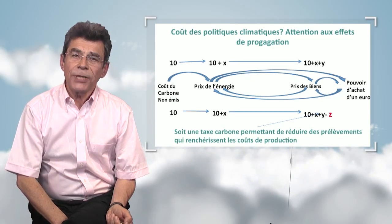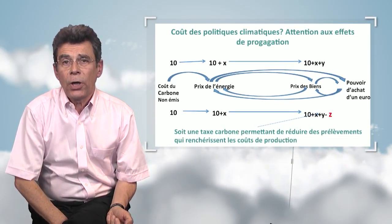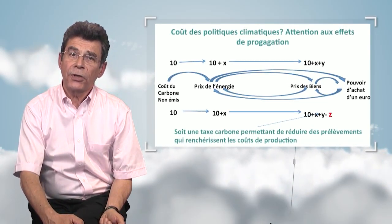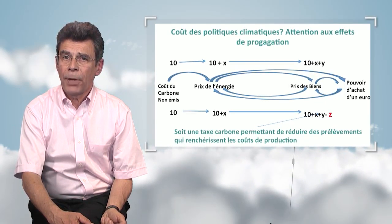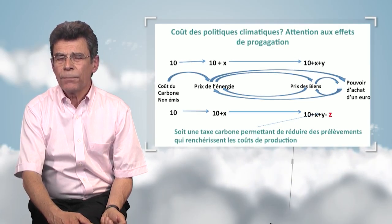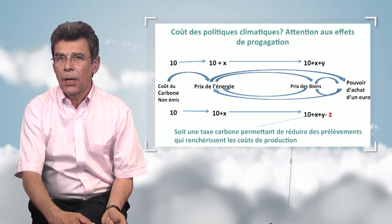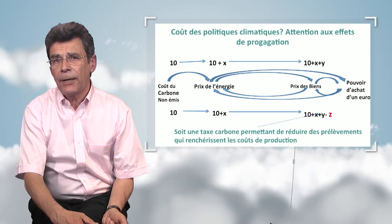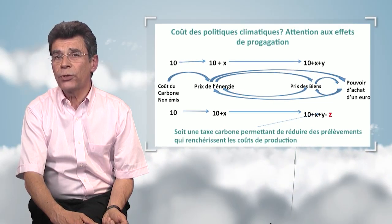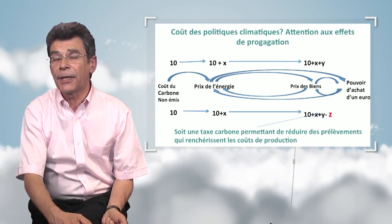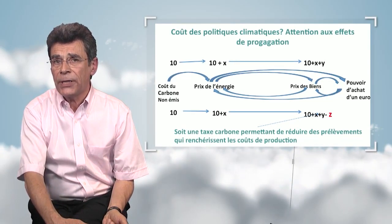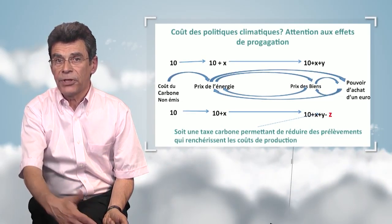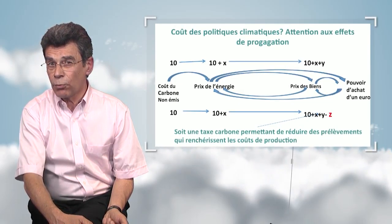Look at this graph. Everything would be simple if, for a carbon price of 10, everybody paid 10. Except that's not the way things are, because the cost of 10 will become 10 plus something — plus X, for instance — when it is built in by the energy-producing company. And also the cost will be forwarded to all the industries that need energy to make steel or concrete and all the other companies downstream. In the kind of simulation we use, the propagation or multiplication phenomenon may end up with a very heavy bill — no longer 10, but 15 or 20.